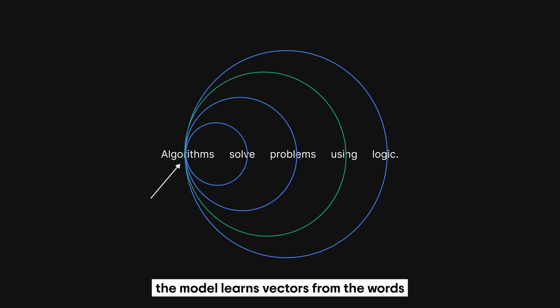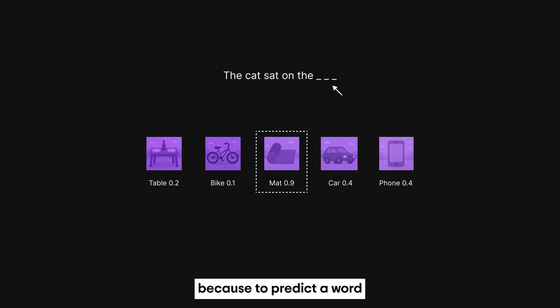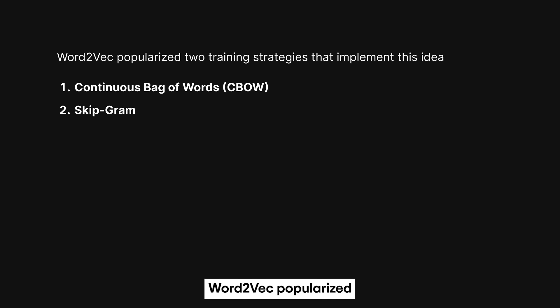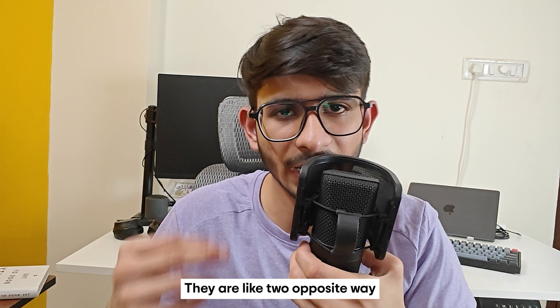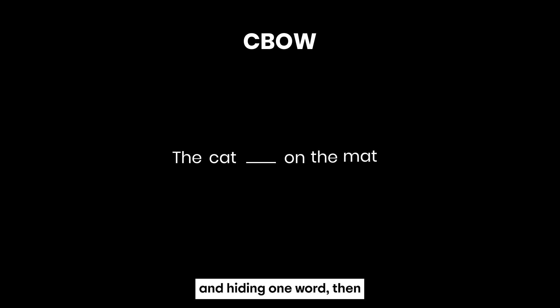Word2Vec is not a single algorithm but a family of related approaches to learn dense vector representations from a large corpus of text. In doing so, the model learns vectors that make those predictions accurate, and over time those vectors come to represent semantic information. Word2Vec popularized two training strategies: Continuous Bag of Words (CBOW) and Skip-gram — like two opposite ways to solve the same fill-in-the-blank problem. In CBOW, imagine taking a sentence and hiding one word, then asking the model to guess the missing word based on the words around it.